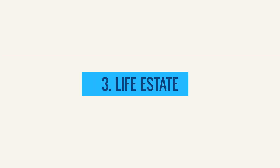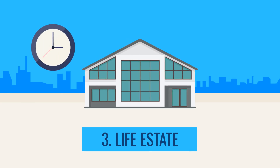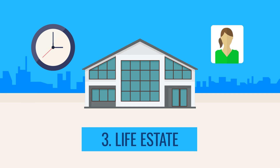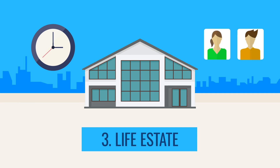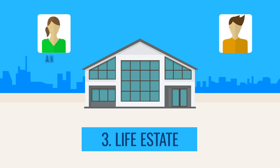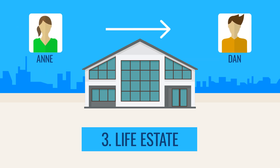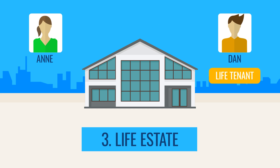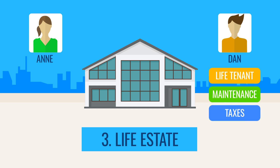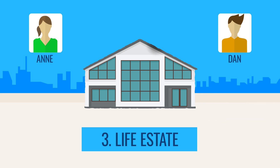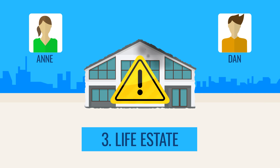A life estate is an interest in real property which is held for the duration of the life of a designated person. It may be limited by the life of the person holding it or by the life of another person. For example, Ann could give a property to Dan for the life of Ann. Dan would be the life tenant. A life tenant receives the property and is responsible for the maintenance of the property and paying taxes. If a life tenant allows a property to deteriorate, it would be committing waste. A life tenant cannot commit waste.